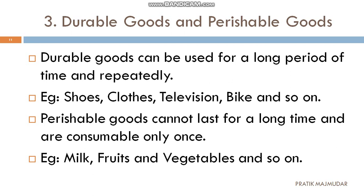Perishable goods are those which cannot be used for a longer period — they are only one-time consumable goods. For example, if you have taken a packet of milk from the store, that milk will be used for only one or two days. After two days it becomes perished and damaged, so those goods are known as perishable goods.